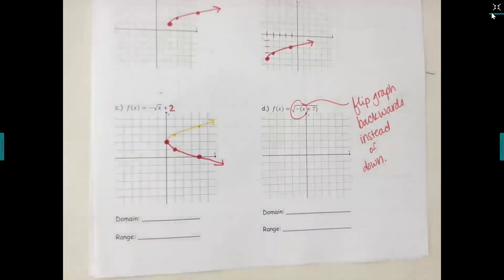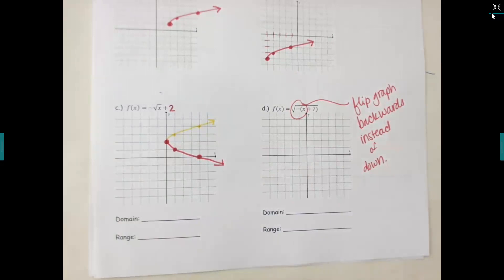If you come across a negative — this is mainly for ACT and SAT — sometimes they'll put the negative on the inside, but if it's a negative on the outside you should be reflecting down, versus a negative on the inside you'd reflect backwards.